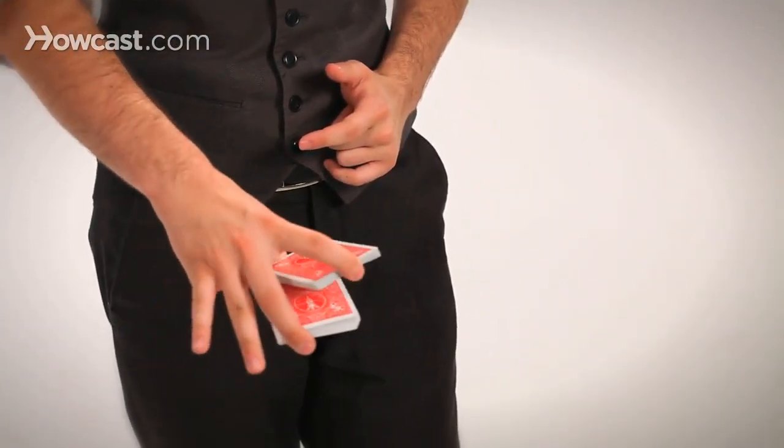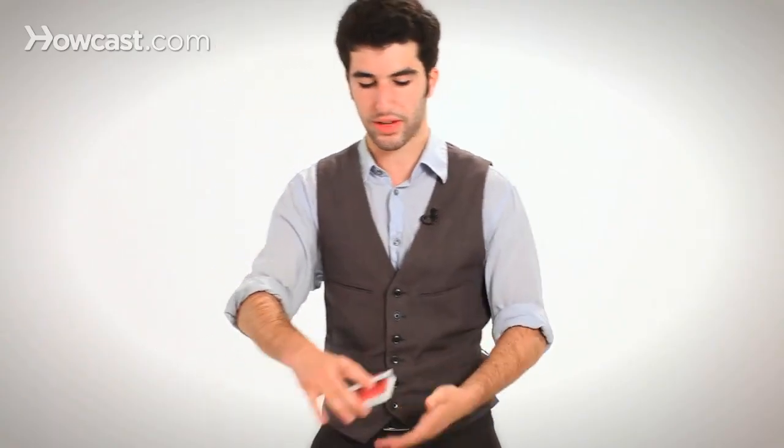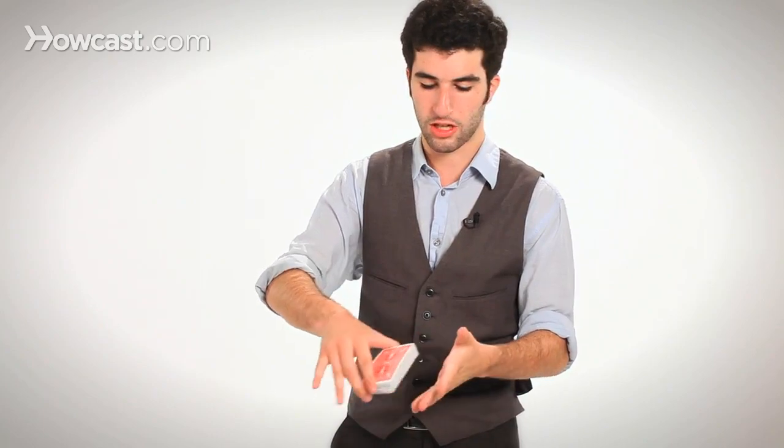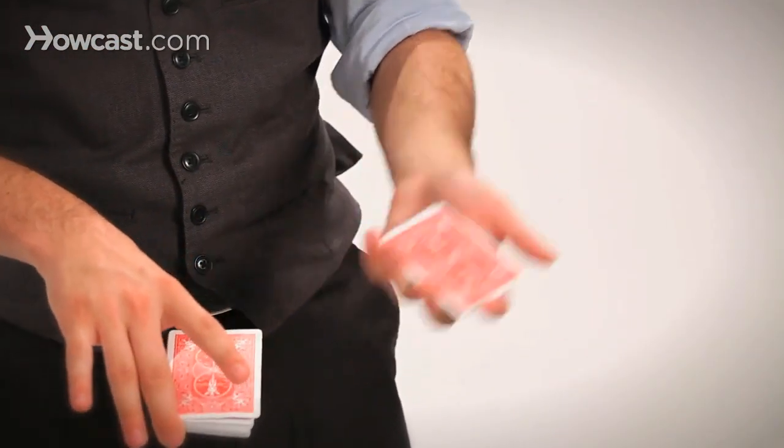And all you're going to do is kick the top portion of the cards out, a little packet, with your index finger. Your index finger is going to just kick them out. As you do that, you're going to take the cards right there into this grip. See how my index finger is on top there?